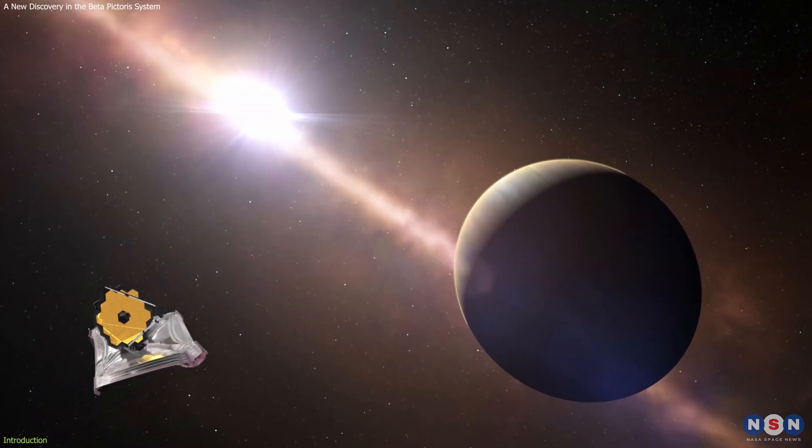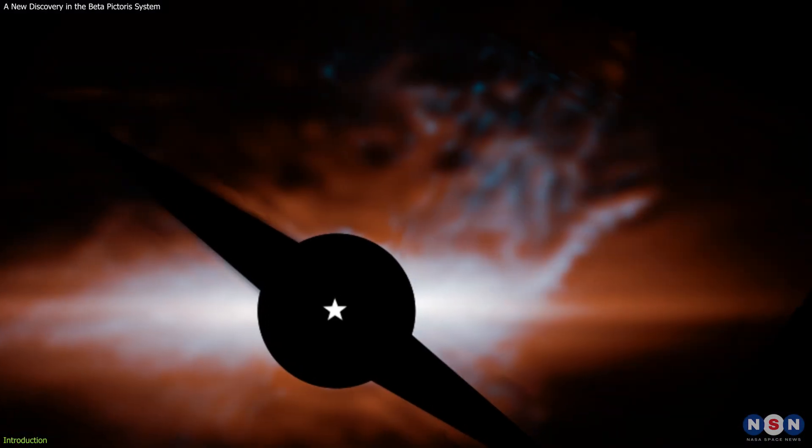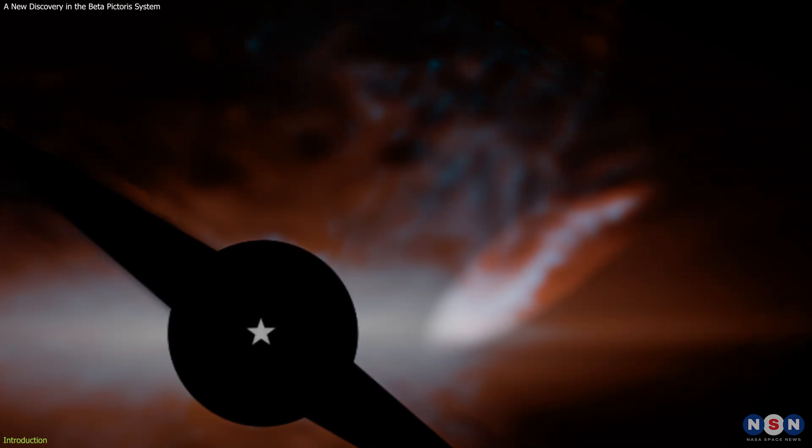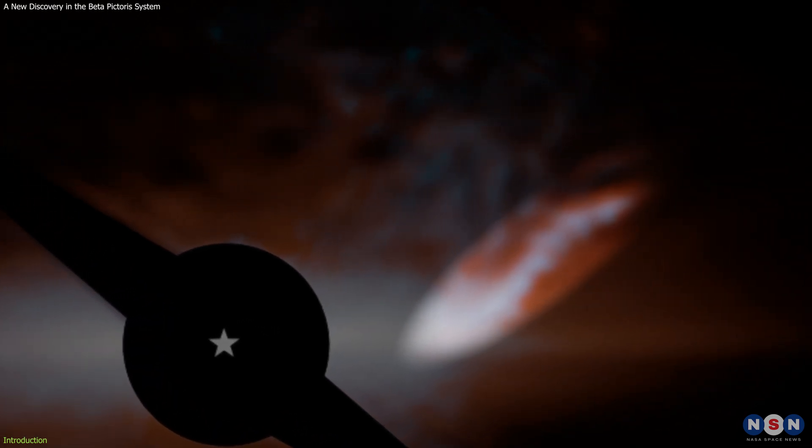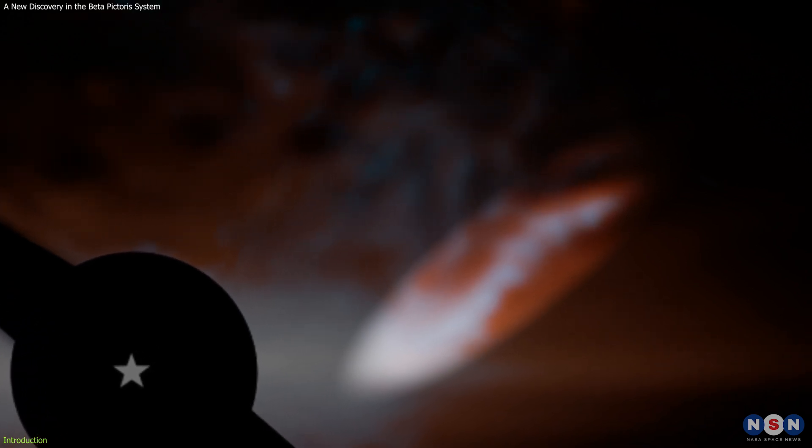One of its targets is this amazing system, which it has observed with two of its instruments. And what it has discovered is a new mysterious structure in the system, a sharply inclined branch of dust, shaped like a cat's tail, that extends from the southwest portion of the secondary debris disk.